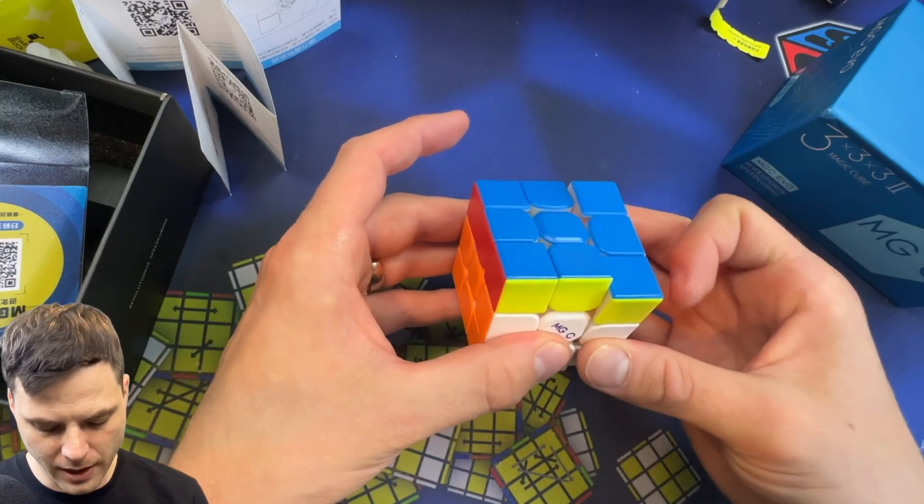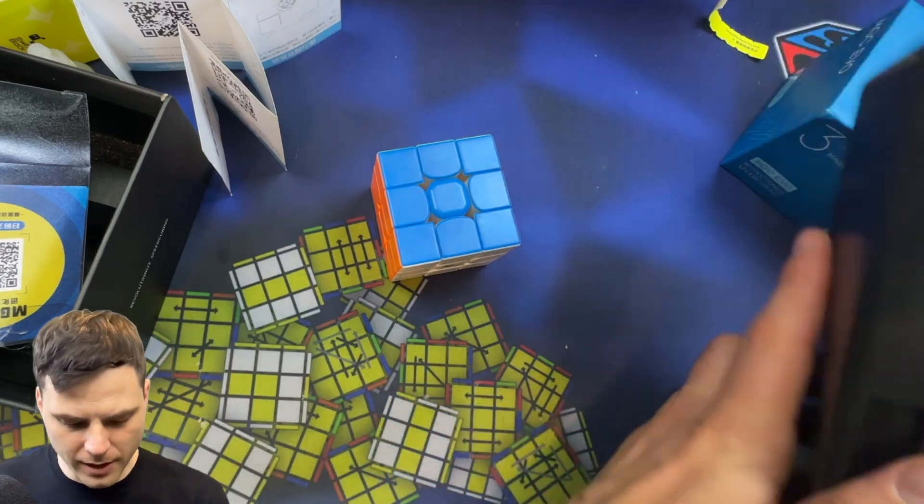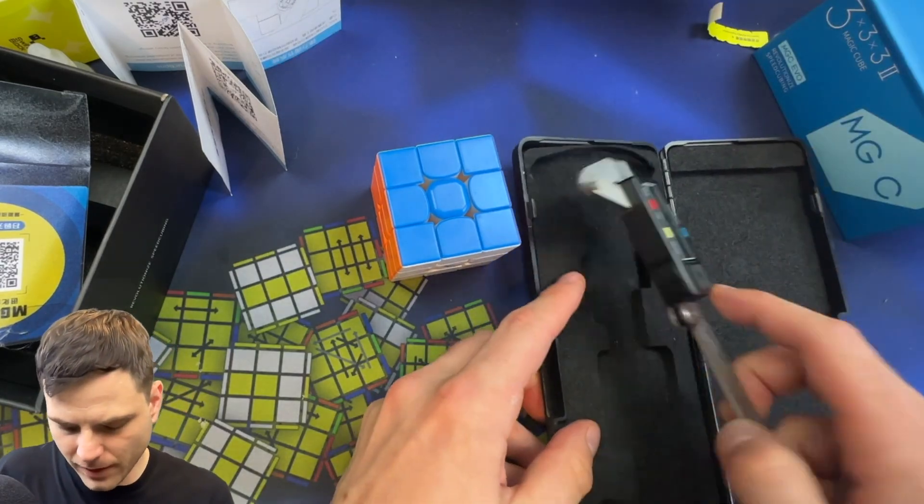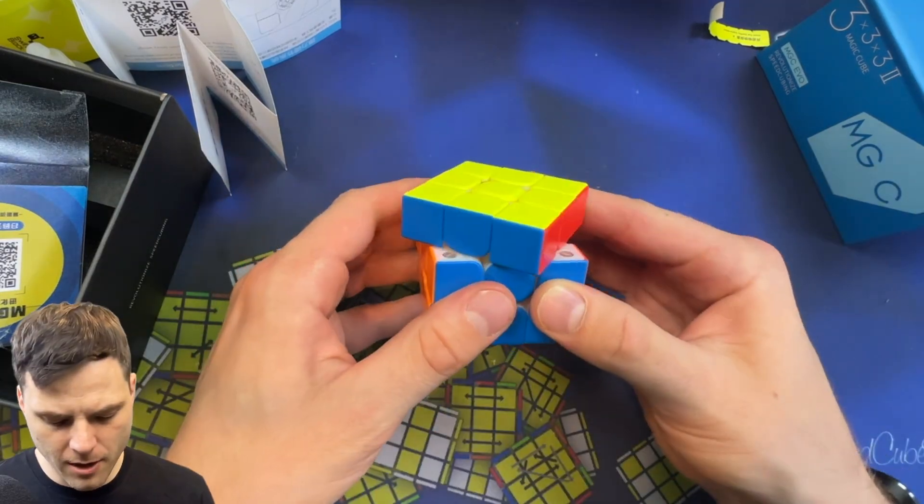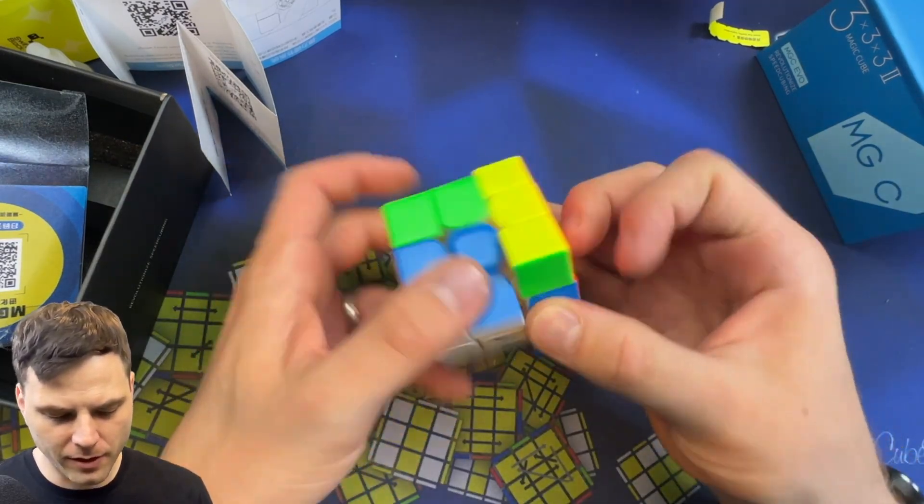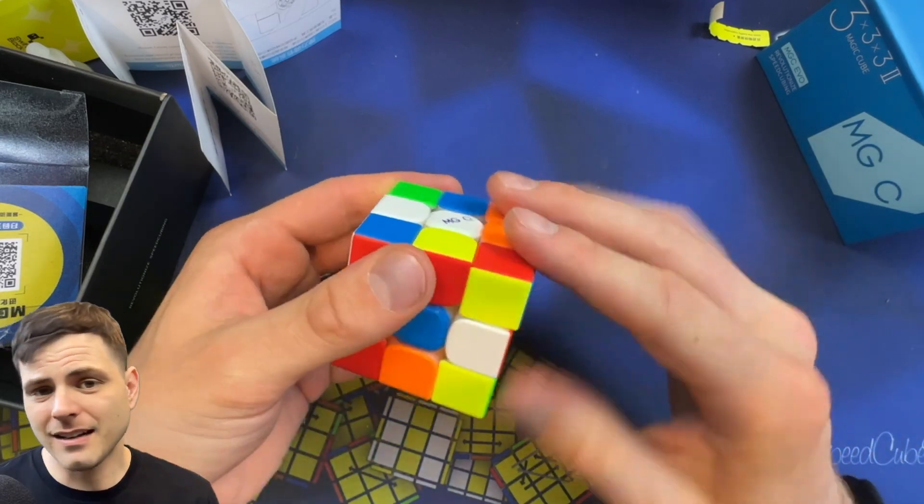Magnets are quite strong right now. Size? What are we looking at here? What do we got as far as size? 55. Okay, so the corner cutting here goes to about 45 before it starts locking up a bit. However, that doesn't really matter.